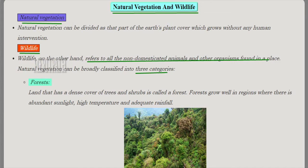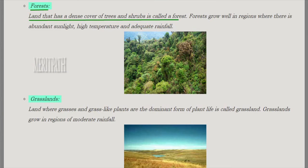Natural vegetation is divided into three categories. The first type is forest — a land which has a dense cover of trees and shrubs. Forests grow well in regions which have good amounts of sunlight, high temperature, and adequate rainfall.